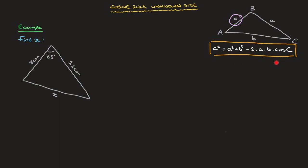At first glance, this formula can look a little complicated, so it's worth spending a tiny bit of time to really understand what it's saying. This formula tells us how to find the unknown side length c. Looking at the right-hand side, we can see that to find this unknown side length, we're going to need the other two side lengths — a and b — and we can also see that we're going to need the interior angle at C, which is the angle opposite the side length we're trying to find.